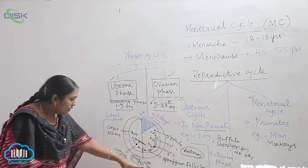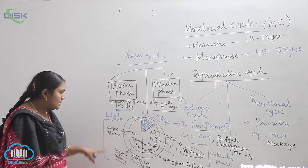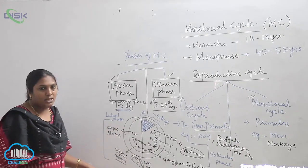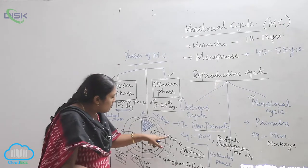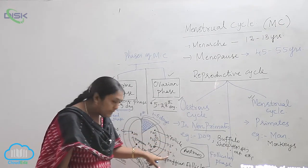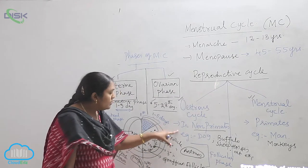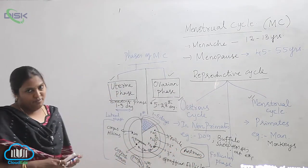So this period after the 14th day is called the luteal phase in females. The period where the primary follicle, secondary follicle, tertiary follicle, and Graafian follicle develop is called the follicular phase.